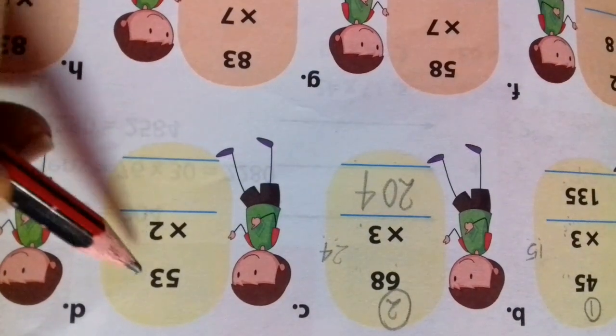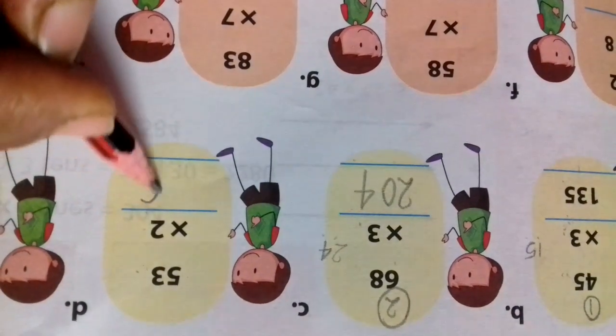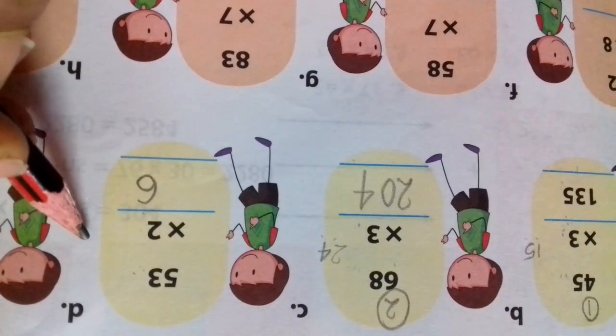2 ones are 2, 2 twos are 4, 2 threes are 6. Here you have no carry here.